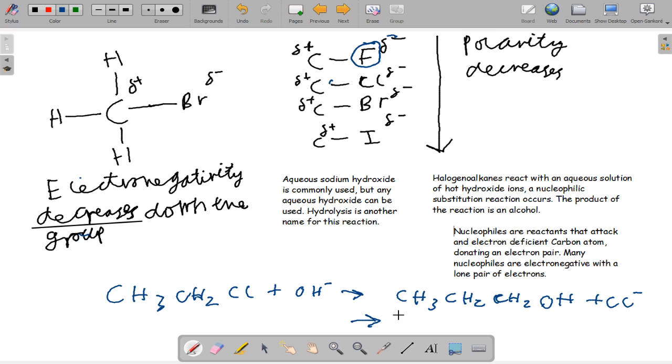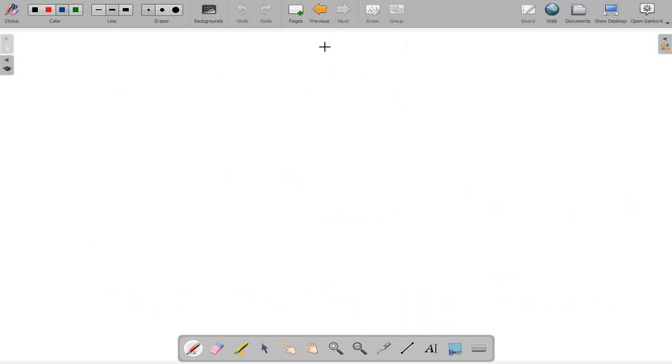The chlorine becomes a nucleophile ion, and then it forms propanol. That's the first product of the reaction. This is hydrolysis. It's when water or aqueous hydroxide ions break a chemical compound into two different compounds.